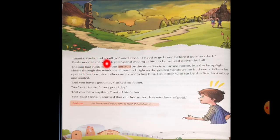"Thanks Paula, and goodbye," said Steve. "I need to go home before it gets too dark." Now Steve got the answer. He knew about the golden windows, so he went to his home. So Paula said goodbye to him. "I need to go home before it gets too dark." Paula stood in the sunset gazing and waving at him as he walked down the hill. The sun had sunk below the horizon by the time Steve returned home. Horizon means the line where the sky seems to touch the land or sea.